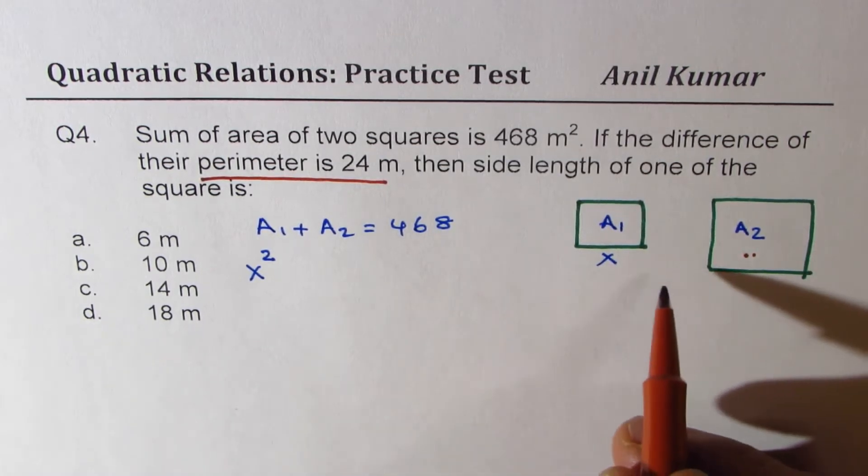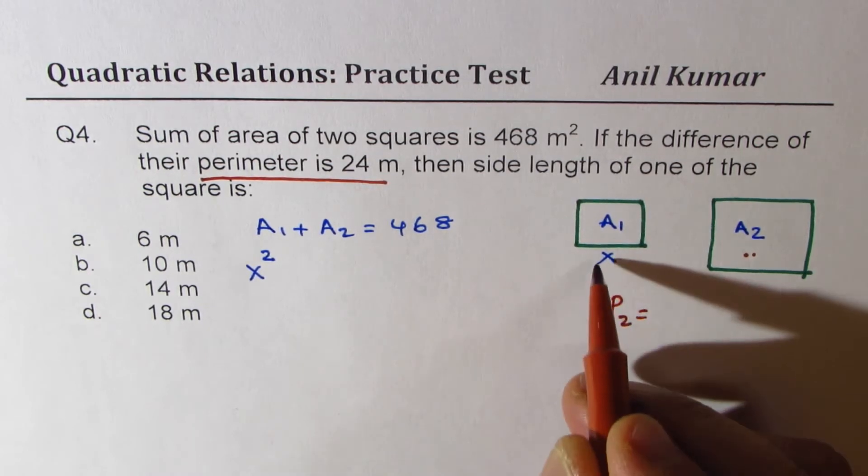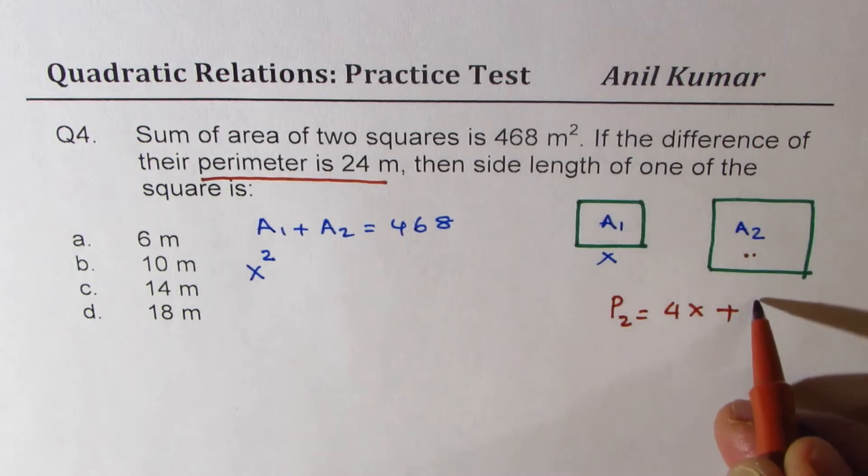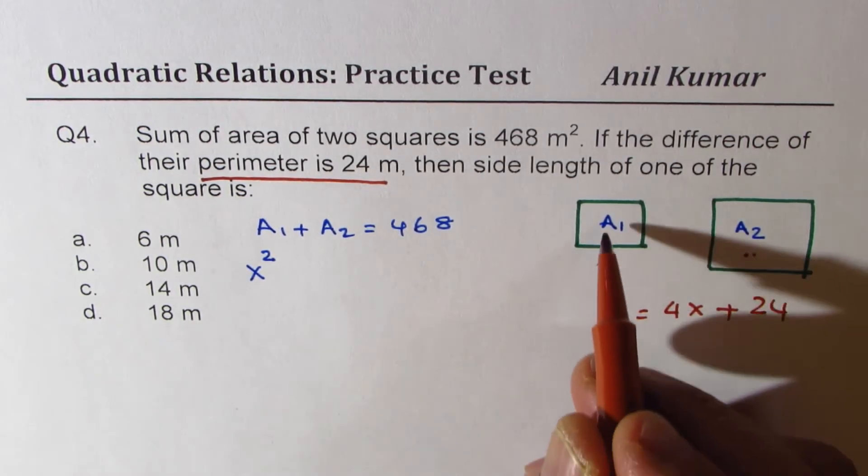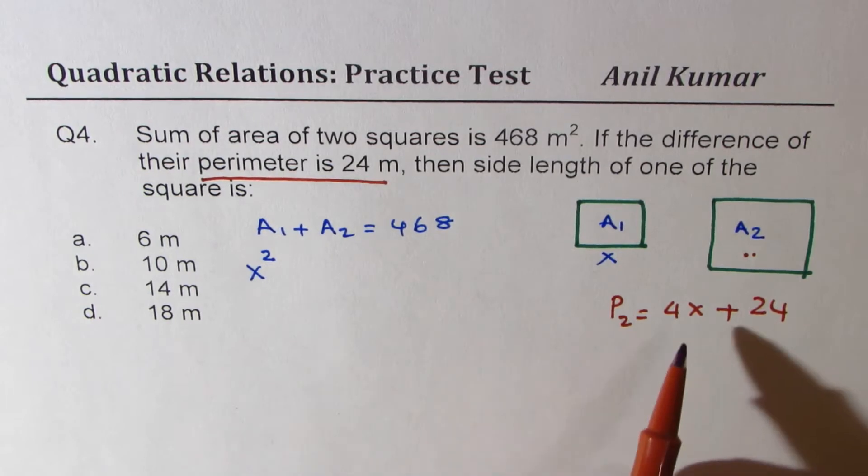So for A2, the perimeter of the second will be 4x plus 24. 24 more than this, the perimeter of the first square will be 4x.